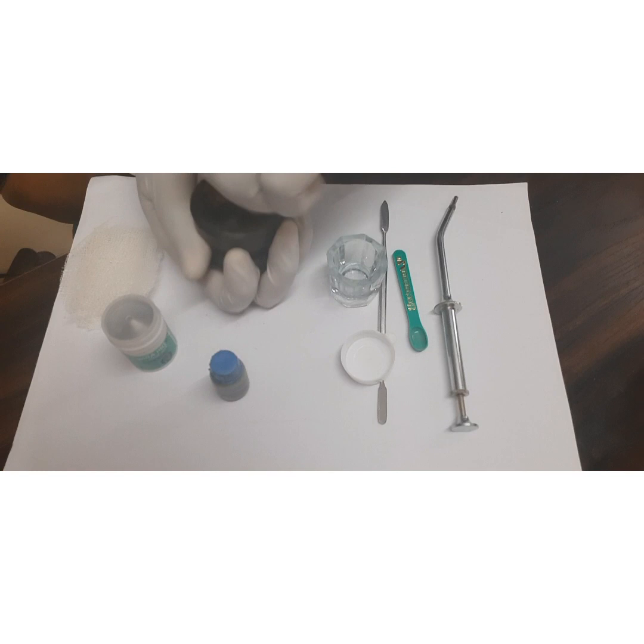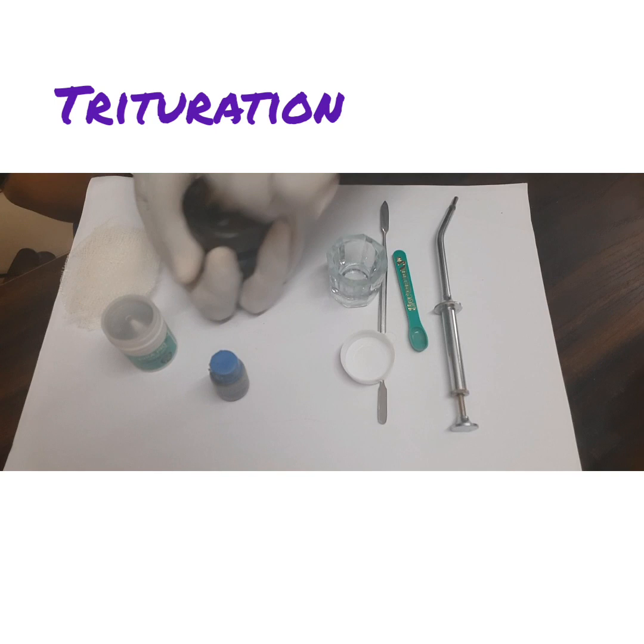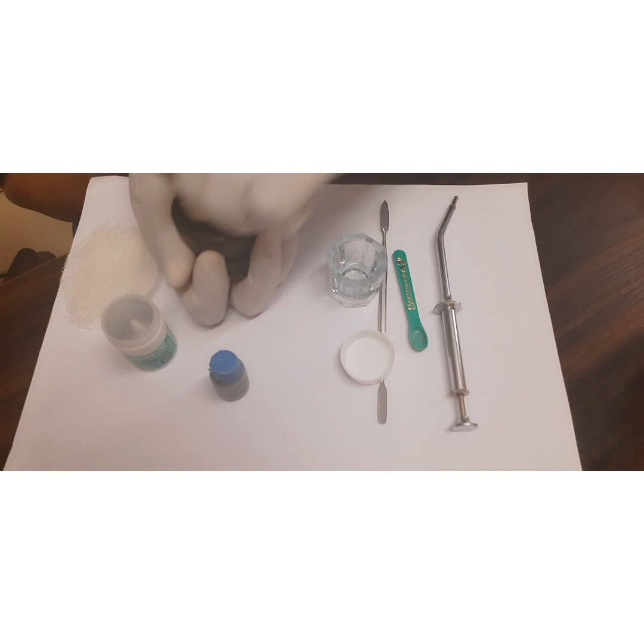Now what happens when you are pressing with the mortar? By rubbing like this, this method of mixing we call trituration. By doing this, by rubbing the powder particles against mercury and against the walls of the mortar, the active surface oxides are removed and then the reaction takes place between mercury and the alloy powder.